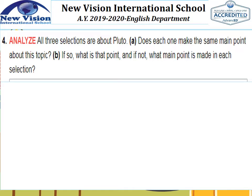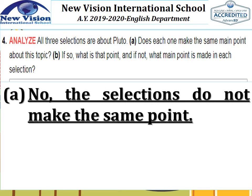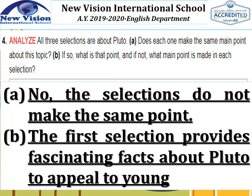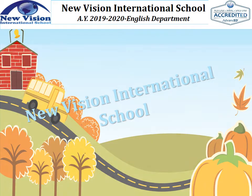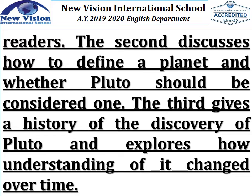For number four, we have to analyze. All three selections are about Pluto. Does each one make the same point about this topic? No, the selections do not make the same point. The first selection provides fascinating facts about Pluto to young readers. The second discusses how to define a planet and whether Pluto should be considered one. And the third article gives a history of the discovery of Pluto and explores how understanding of it changed over time.